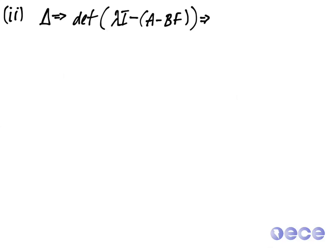So A, we wrote before, it's minus 1, 0, 0, minus 3. And then B was 1, 1. And F is f1, f2.